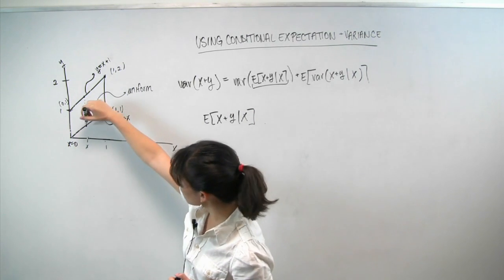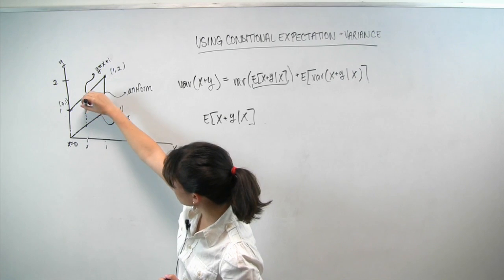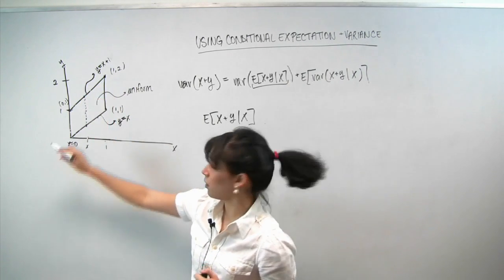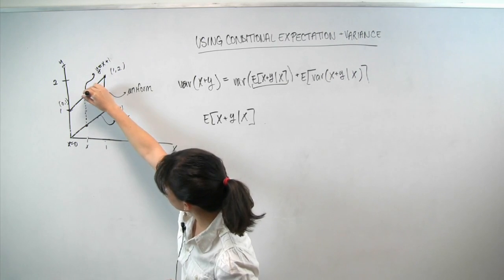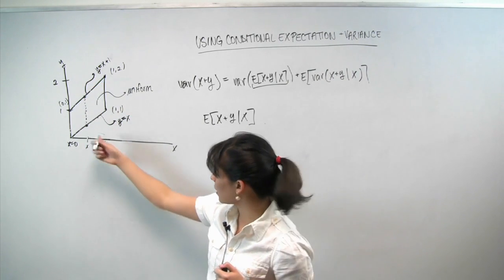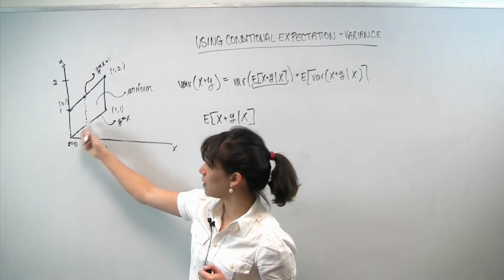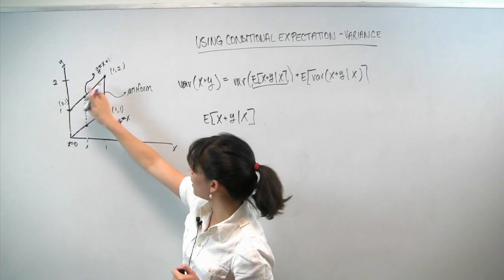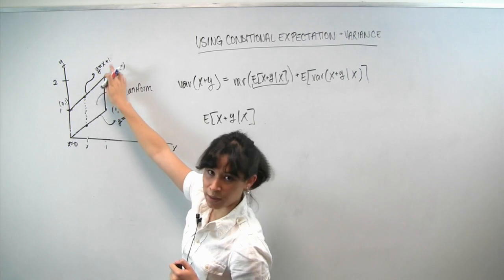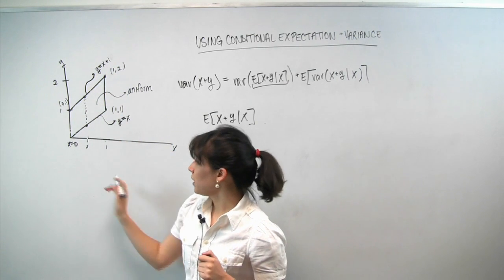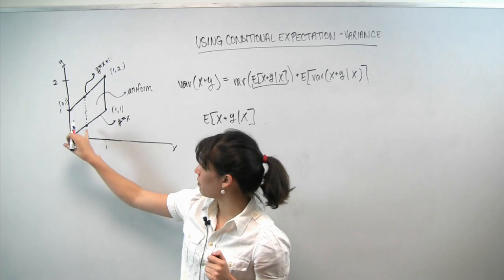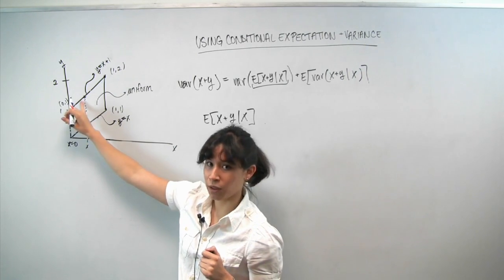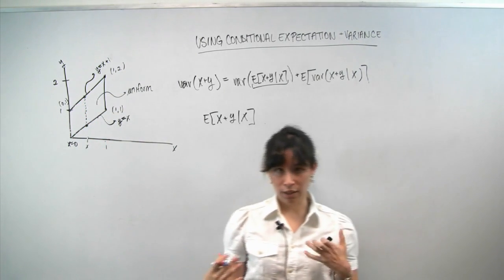So y can only vary between this point and this point. Now I've already written down here that the formula for this line is given by y is equal to x. And the formula for this line is given by y is equal to x plus 1. So in particular, when we condition on x, we know that y varies between x and x plus 1. But we actually know more than that.